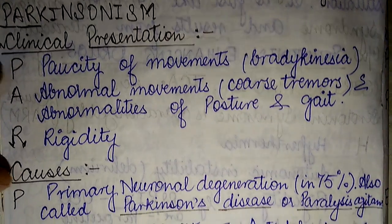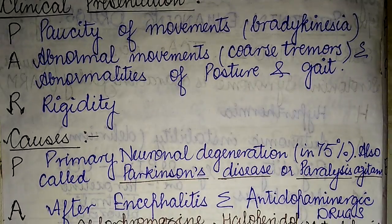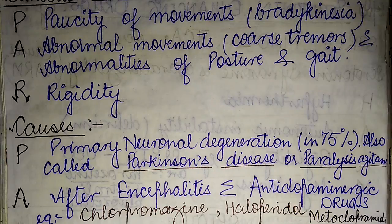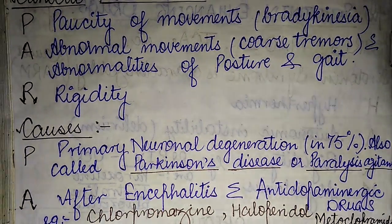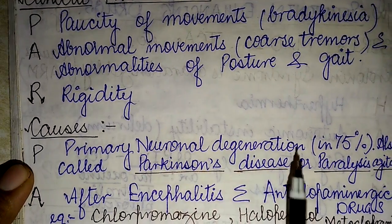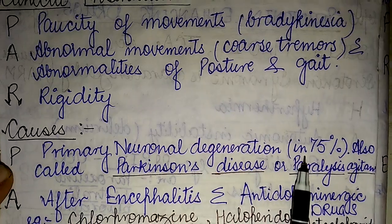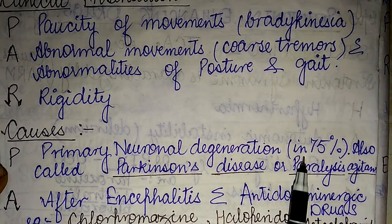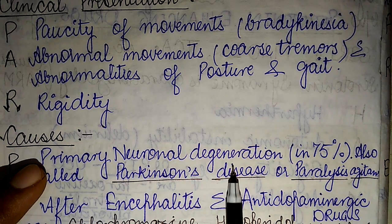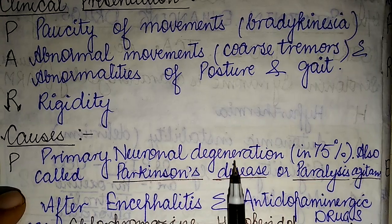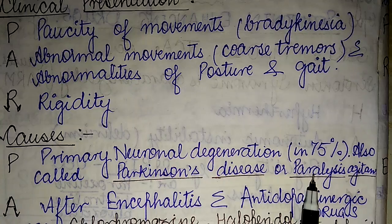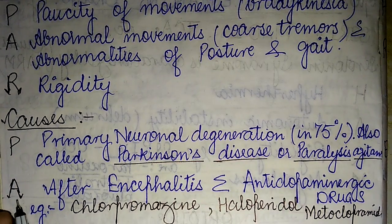Now a quick look at the causes of Parkinson's disease. The first P stands for primary neuronal degeneration, which is the most common cause, occurring in 75% of Parkinson's cases. This degeneration occurs in the brain, also called Parkinson's disease or paralysis agitans.